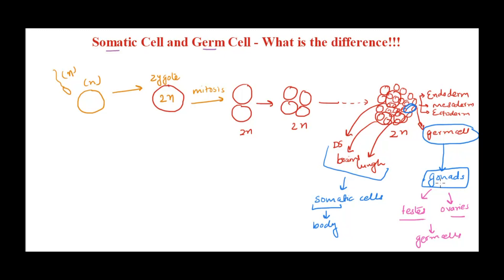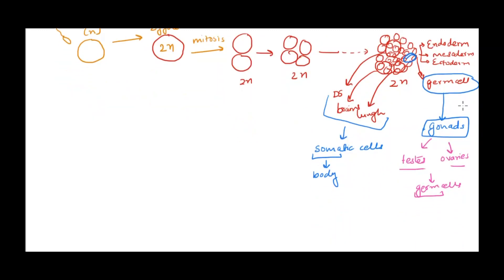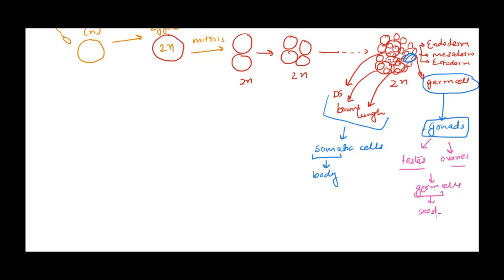So there are basically two types: somatic cells — all the body cell types — and germ cells, which are present in the gonads. 'Germ' means seed, which makes sense because the gonads, through gametogenesis, produce sperm and egg. Sperm and egg eventually fuse to give us a new organism, so they act as seeds. Germ cells are the cells present in the gonads that give us sperm and egg.